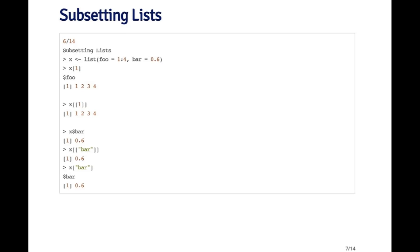Here I've got a list. The first element is a named element called foo — it's a sequence one through four. And the second element is named bar and it's the number 0.6. So this is a list with two elements in it.